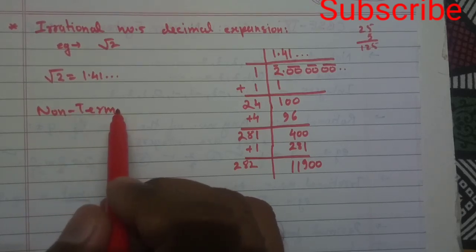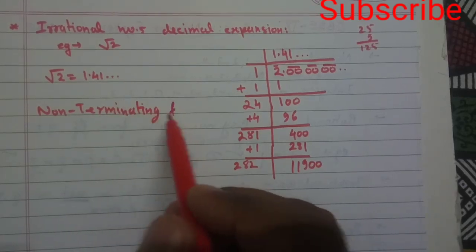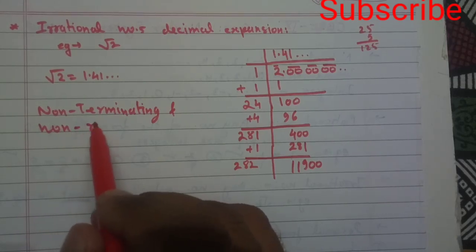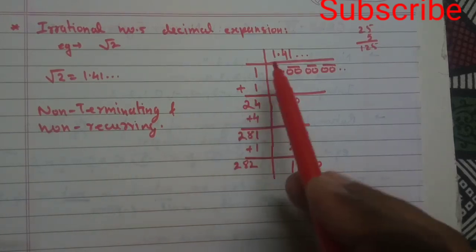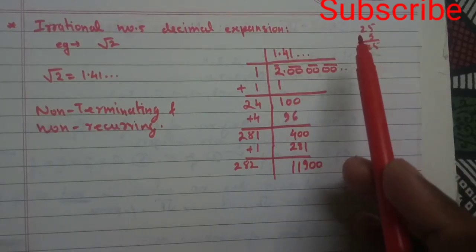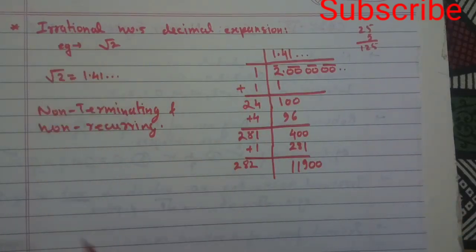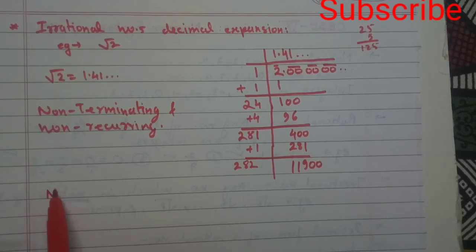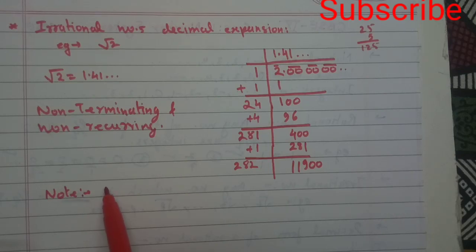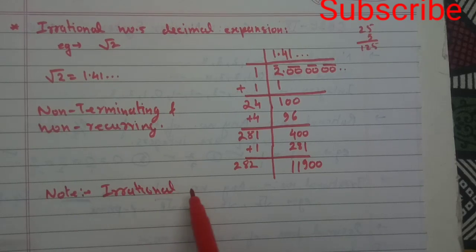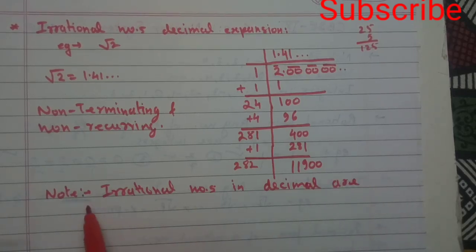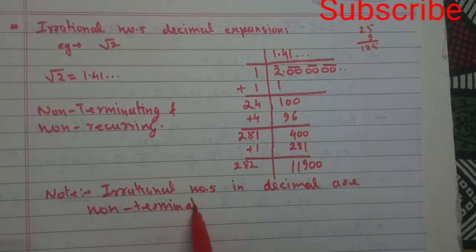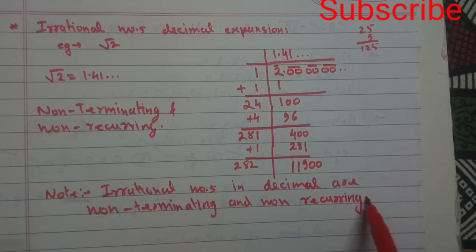The decimal expansion of root 2 is non-terminating and non-recurring, that is, non-repeating. So we conclude that irrational numbers in decimal form are non-terminating and non-recurring.